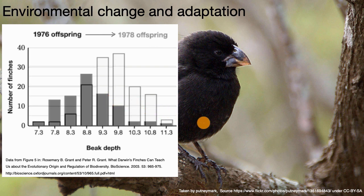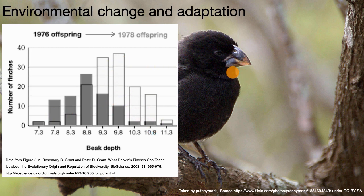No individual member of the species somehow grew their beak. But as we saw, there is always variation in beak depths. Year after year, the birds with bigger beak depth were more likely to survive and reproduce, so the species as a whole adapted to the new environmental conditions.